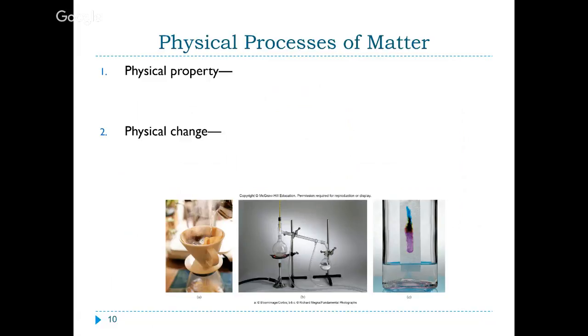So what are the physical processes of matter? Well, we can look at a physical property and a physical change. So physical property is going to be something that identifies a piece of matter. And by identifying it, you're not changing what is there. So physical properties are often things that we can observe with our five senses. What does it look like? Does it have a color associated with it? Is it a liquid or a solid or gas? Does it have a particular smell to it? If it's a solid and you touch it, does it feel hard? Does it feel soft? These are all physical properties. Density, right? That's a physical property. When you measure the substance's mass and compare it to its volume, you're not changing anything about that substance.